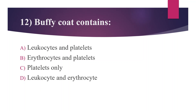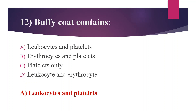Twelfth question: buffy coat contains — Option A: leukocytes and platelets. Option B: erythrocytes and platelets. Option C: platelets only. Option D: leukocytes and erythrocytes. The answer is Option A, leukocytes and platelets. Buffy coat is a layer of mixed white blood cells and platelets created by high-speed centrifugation of whole blood, and is commonly used for DNA extraction.